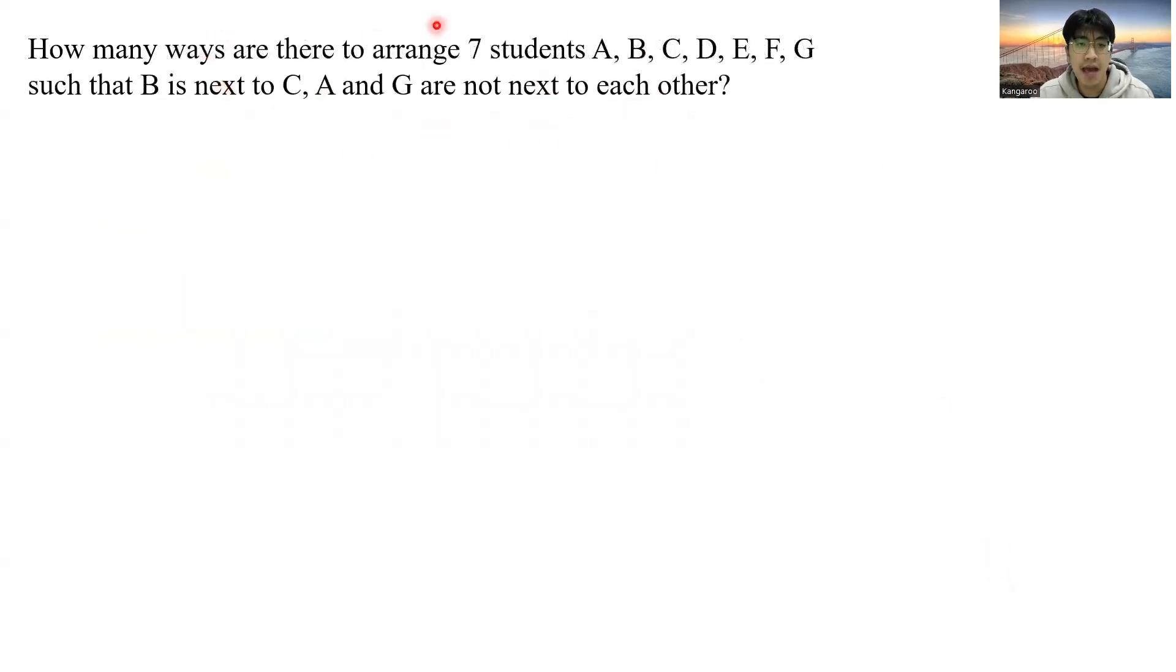How many ways are there to arrange seven students A, B, C, D, E, F, G such that B is next to C, A and G are not next to each other?